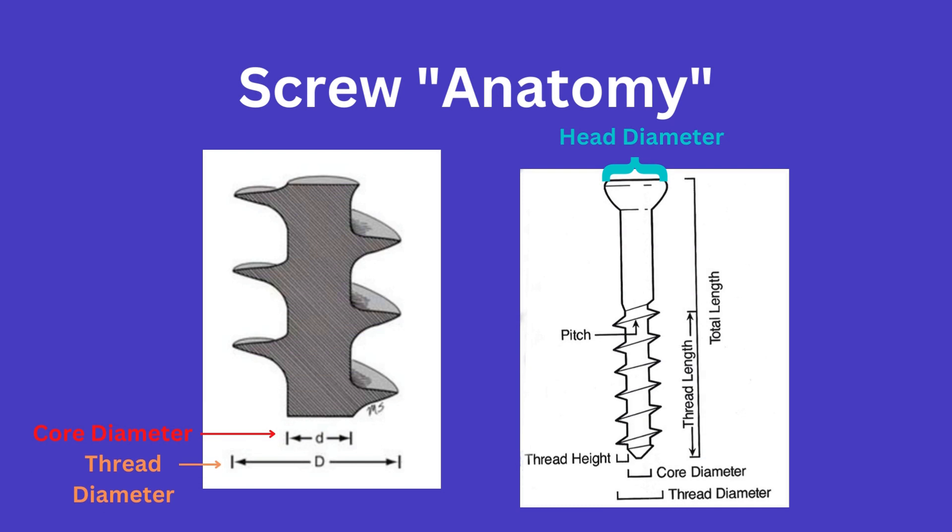Let's start with the diameters that are measured. The thread diameter is the length represented here by capital D and measures intuitively from thread to thread directly across the screw. The core diameter is represented here by lowercase d and is the diameter of the screw excluding the threads. Finally, the head diameter is a length across the head of the screw as seen here.